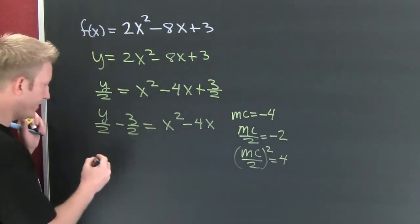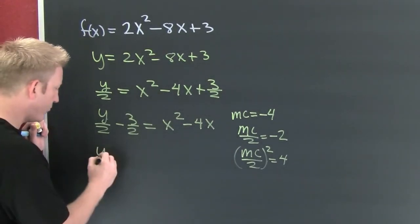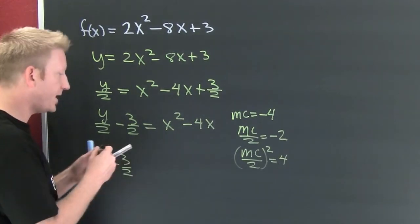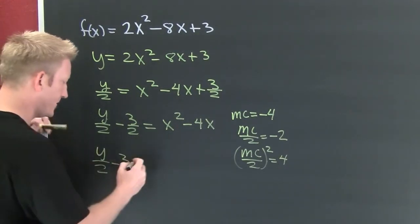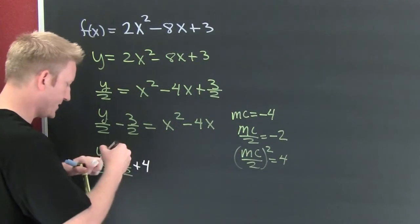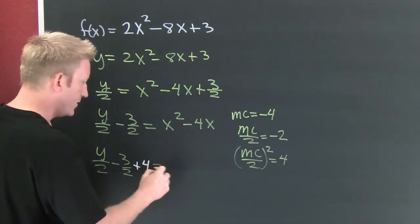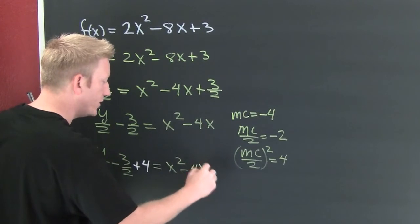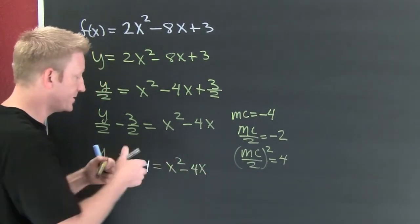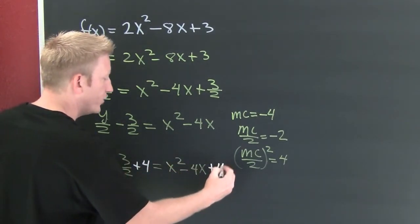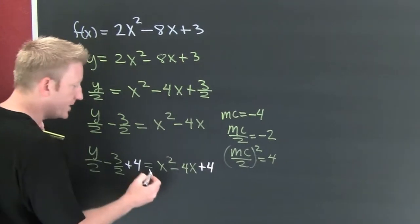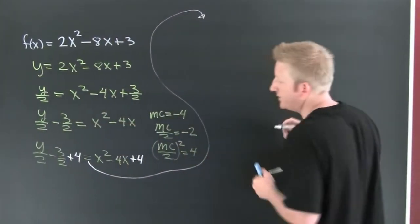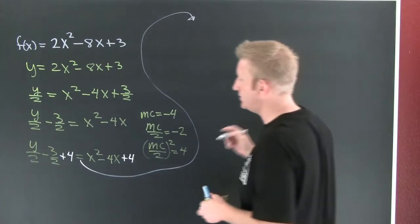So I take half the middle coefficient squared and add it to both sides. Over here I have y over 2 minus 3 halves plus 4, and that equals x squared minus 4x plus 4.